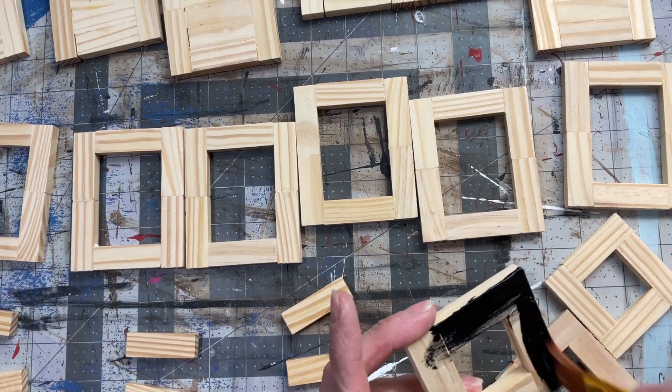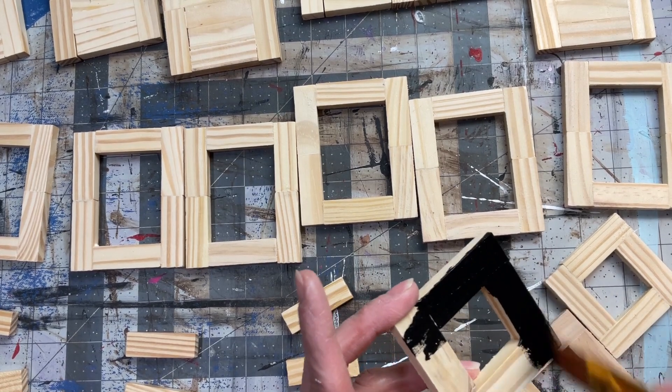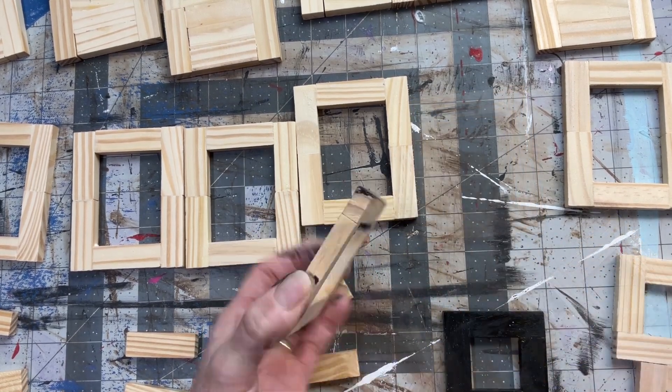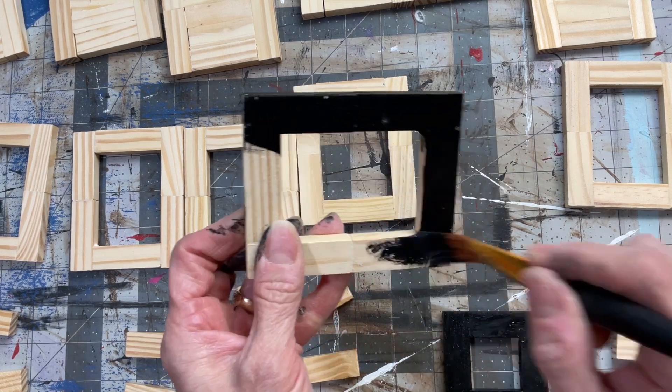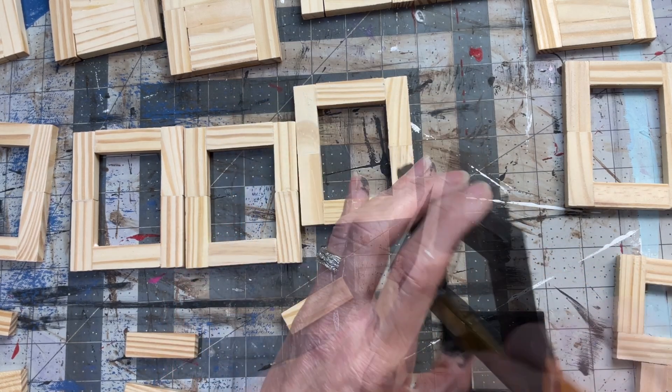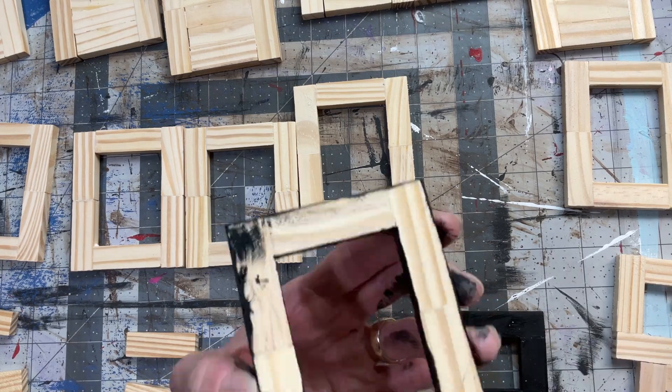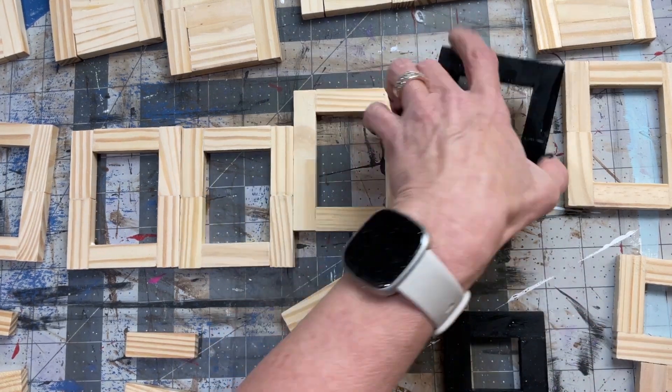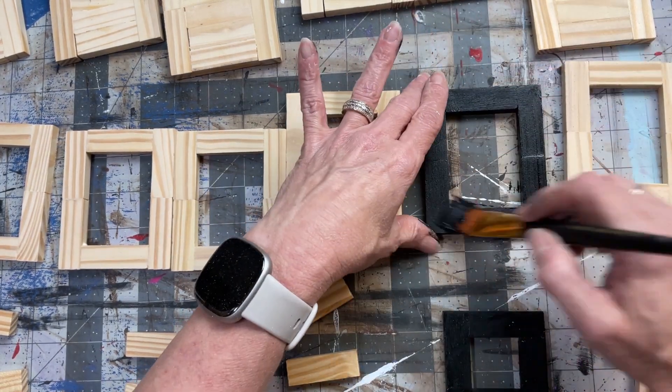So, once I've sanded all my pieces, I'm going to paint everything with my black Waverly chalk paint. I'm going to do the top, the bottom, the insides, the outsides, all the edges, because I want it all painted before we glue our lanterns together.